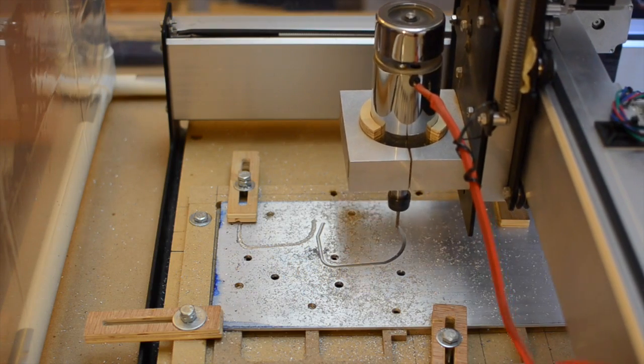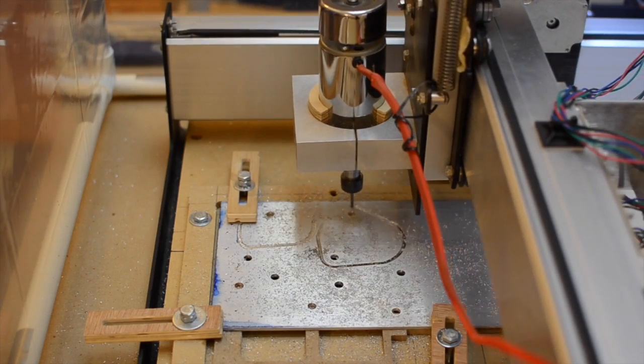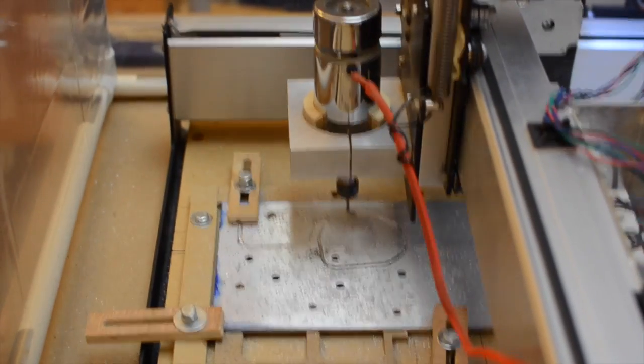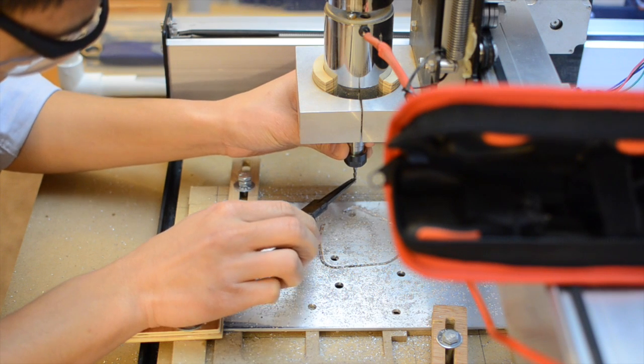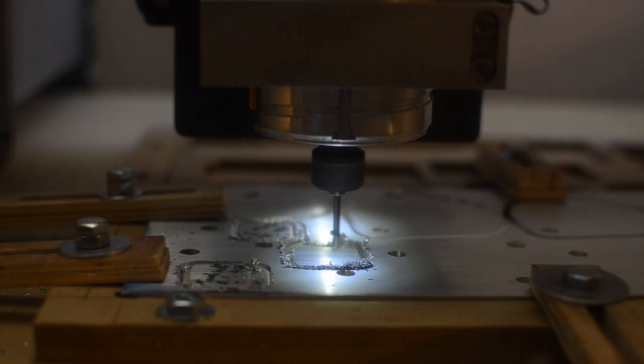Aluminum is a far less forgiving material than wood or plastic. Get it wrong and you'll be snapping endmills left and right. I've nearly welded bits into 6061 flat stock on more than one occasion. There are a couple factors you need to keep in mind.